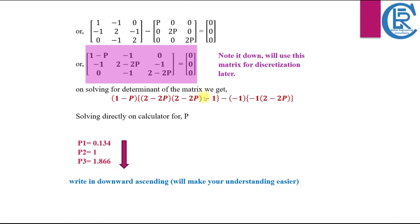Perform straightforward matrix operations and calculate the determinant to form an equation, then calculate the value of p directly using your calculator. Please note this matrix as we will use it again in the discretization process. The values of p calculated are 0.134, 1, and 1.866. Write these in ascending order to make computation easier. The number of stories in our building equals the number of distinct values of p obtained.